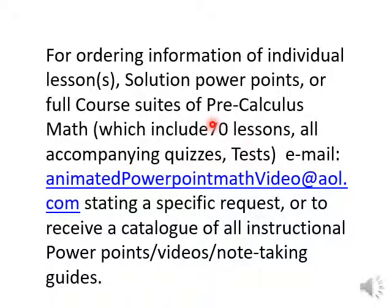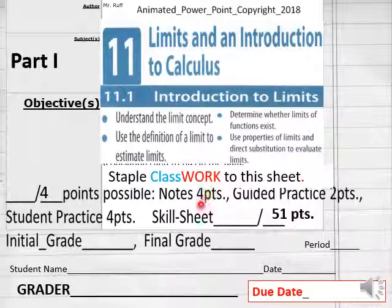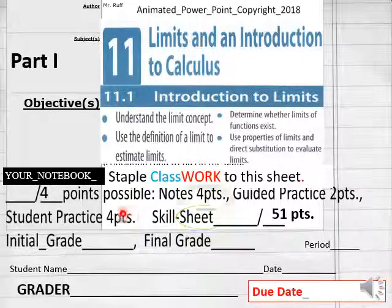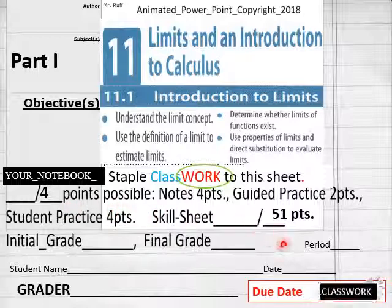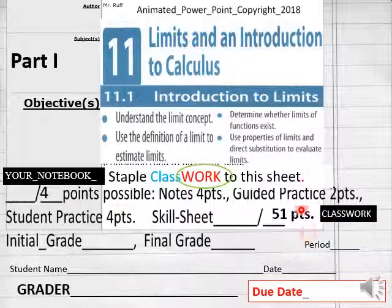Hello everybody, getting ready to do lesson 11.1 part one classwork for pre-calculus math today. For today's lesson you got four points in your notebook and 51 points will go on your classwork sheet. Have that out in front of you — name, date, period, due date — here for my online students.